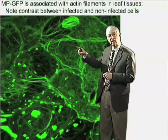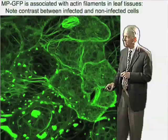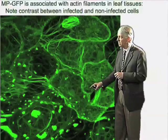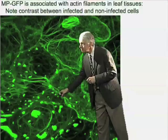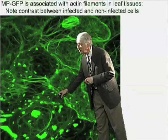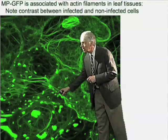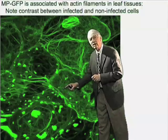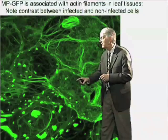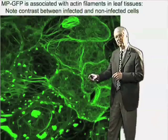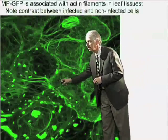Here you see a non-infected cell, and down in this section you can see that there are these globs, these blobs that I talked about earlier. Those represent the virus replication complex, as we talked about before. So what we're looking at is a very interface between an infected cell and a non-infected cell — this one being non-infected, and these down here being infected.